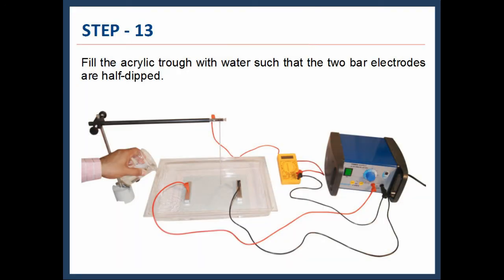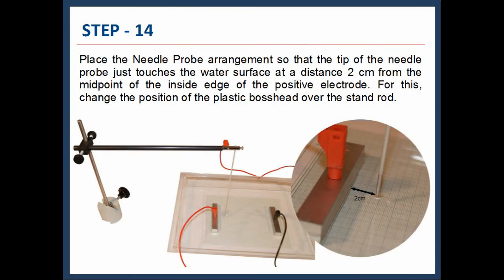Then, fill the acrylic trough with water such that the two bar electrodes are half tipped. After that, place the needle probe arrangement so that the tip of the needle probe just touches the water surface, at a distance two centimeters from the midpoint of the inside edge of the positive electrode.